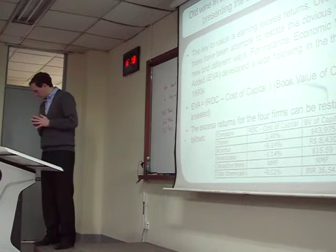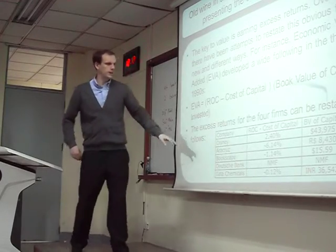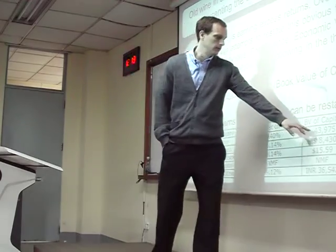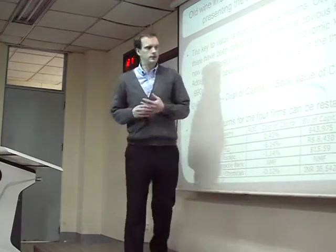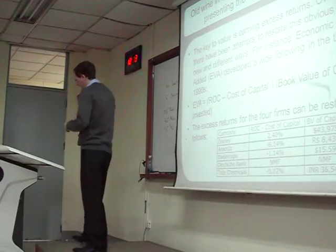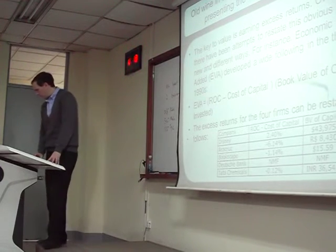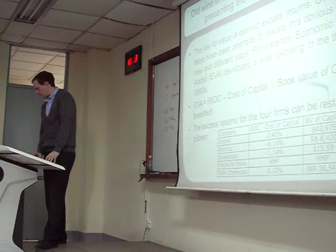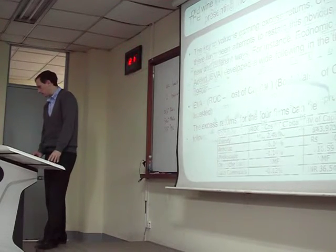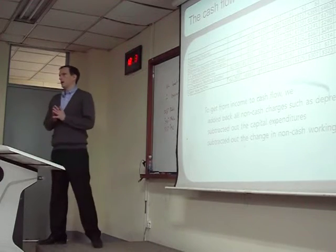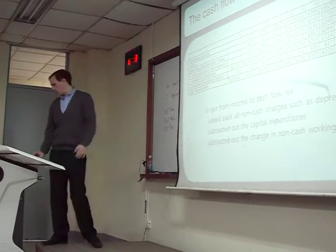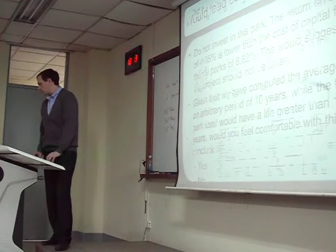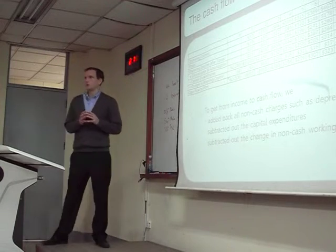For Disney, we can calculate return on capital minus cost of capital, then find our book value of capital and get our economic value added. This is basically using the accounting earnings. But we should be aware that using cash flow is better than using accounting earnings.